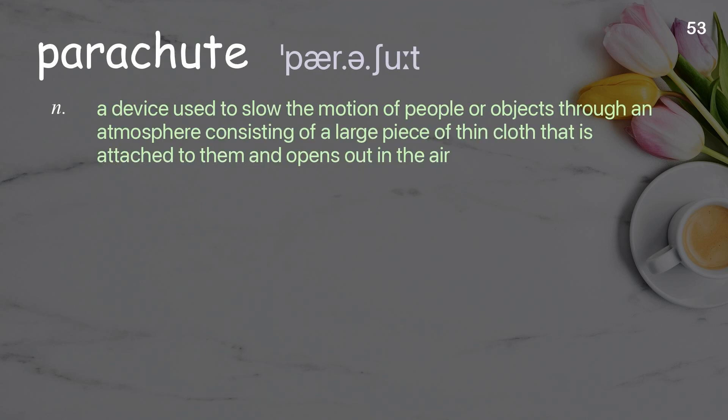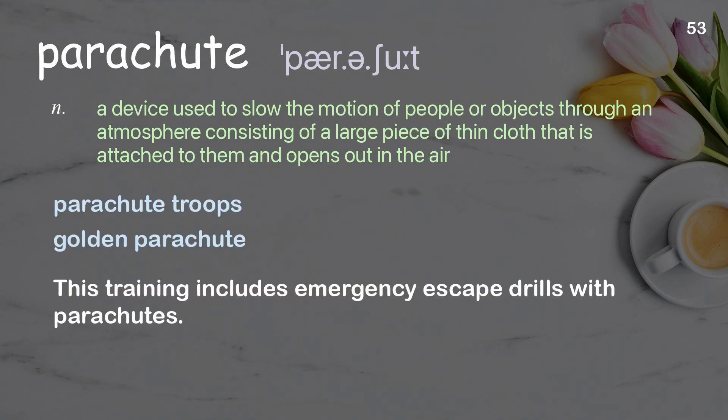Parachute: a device used to slow the motion of people or objects through an atmosphere, consisting of a large piece of thin cloth that is attached to them and opens out in the air. Examples: parachute troops; golden parachute. This training includes emergency escape drills with parachutes.